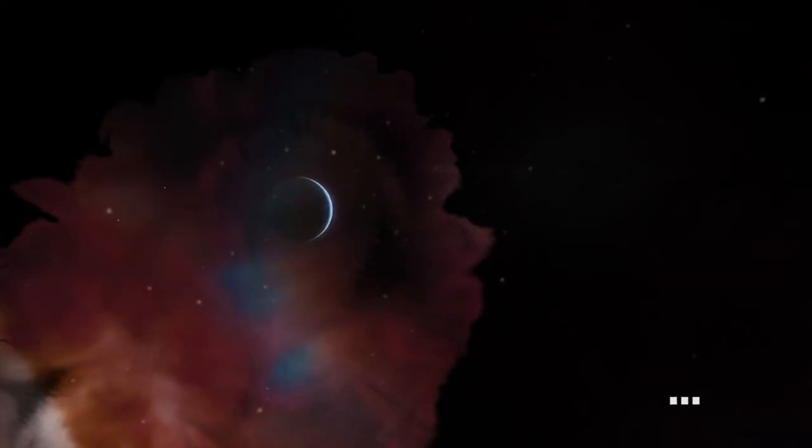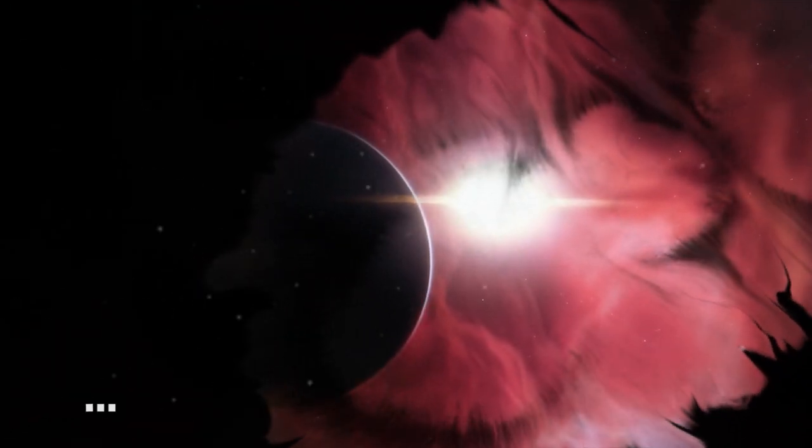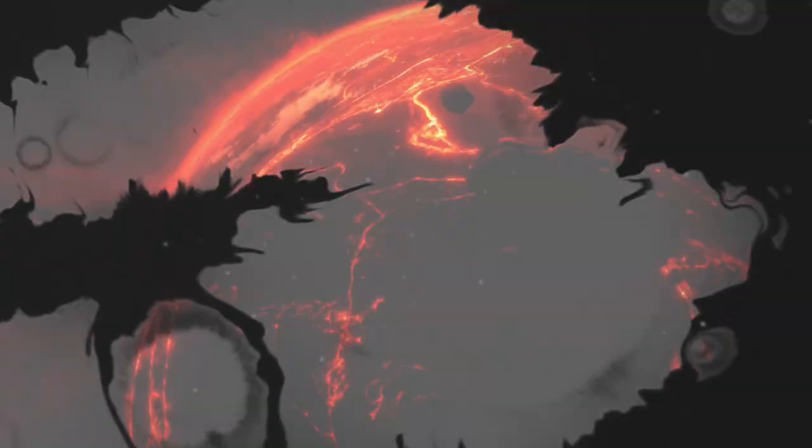Astronomers may have seen light from a planet in a habitable orbit around another star for the first time ever. What's this? Well, let's find out.